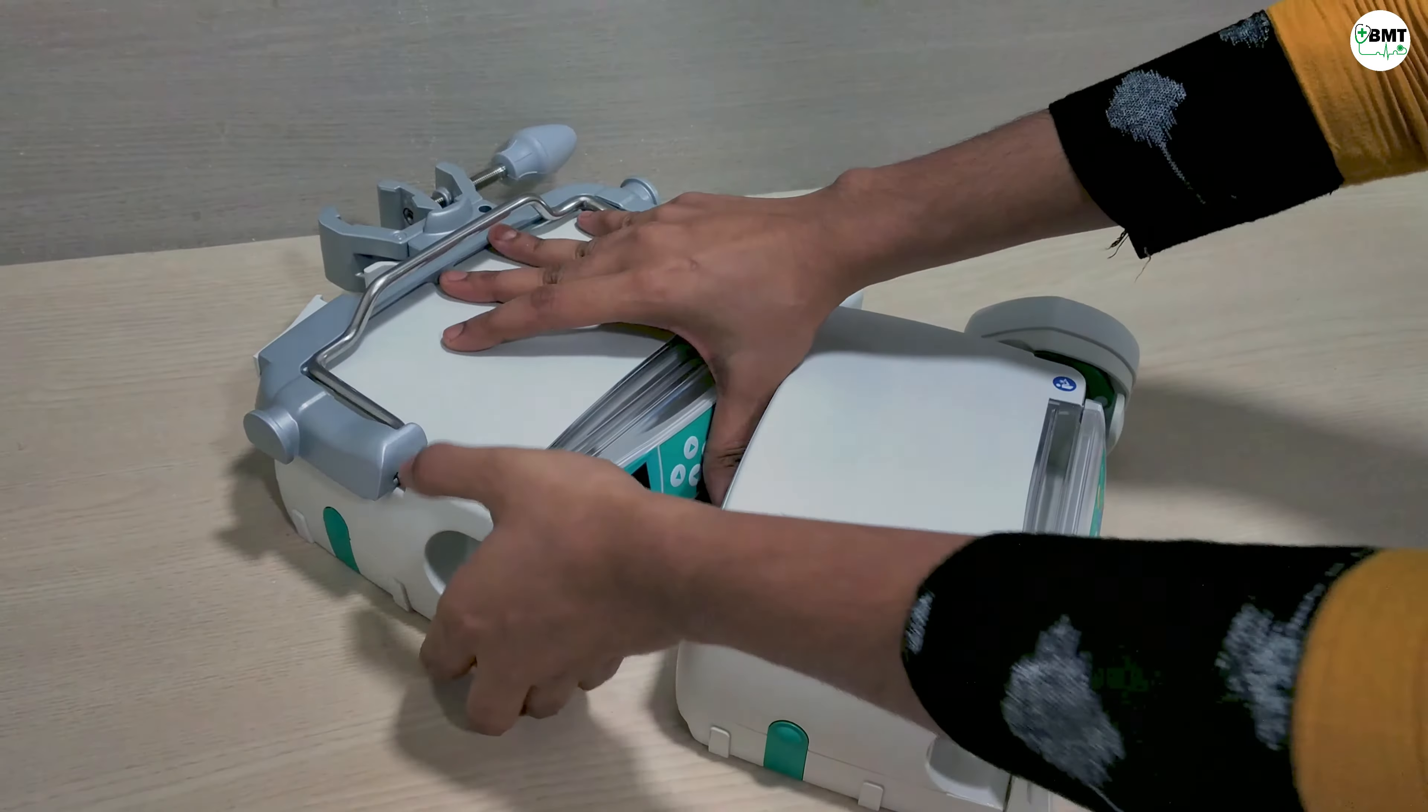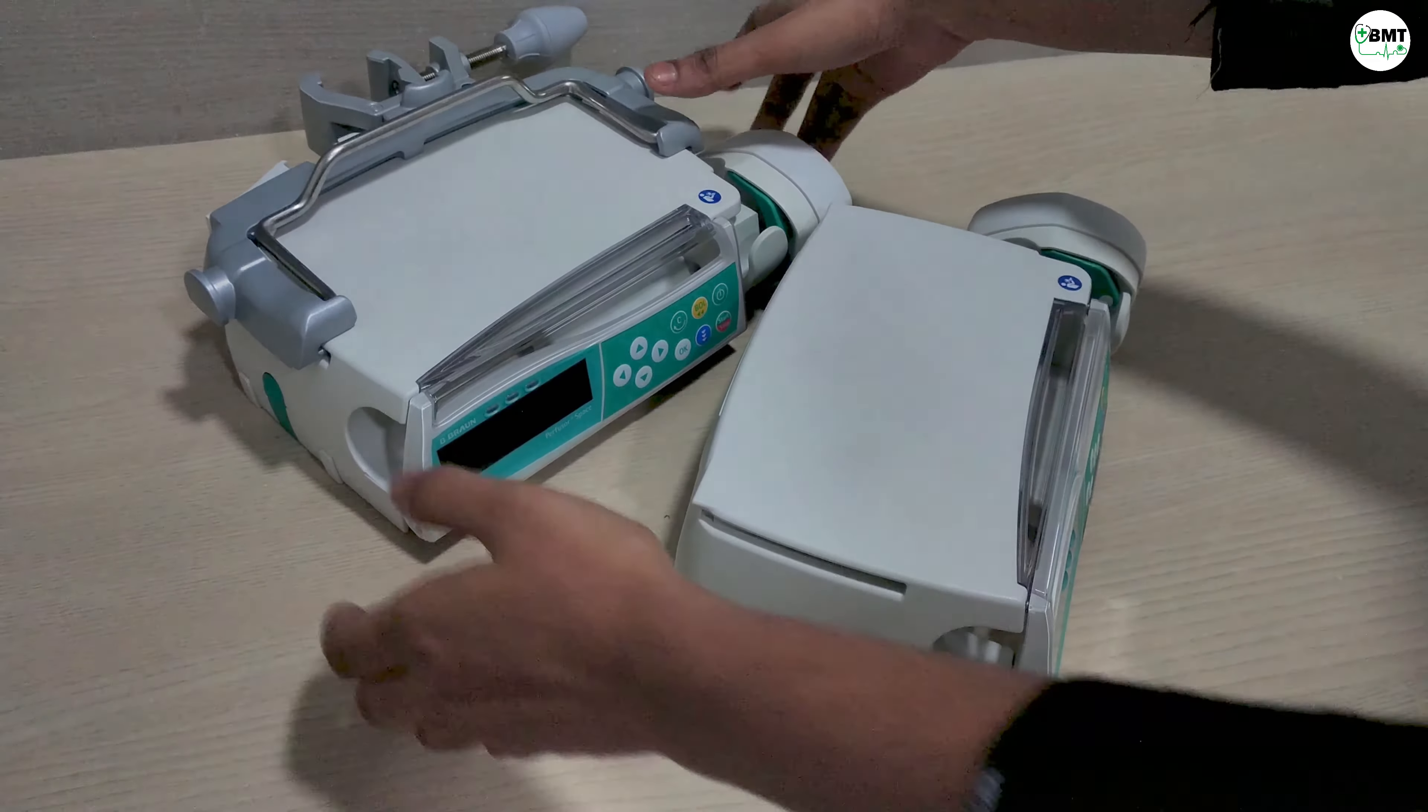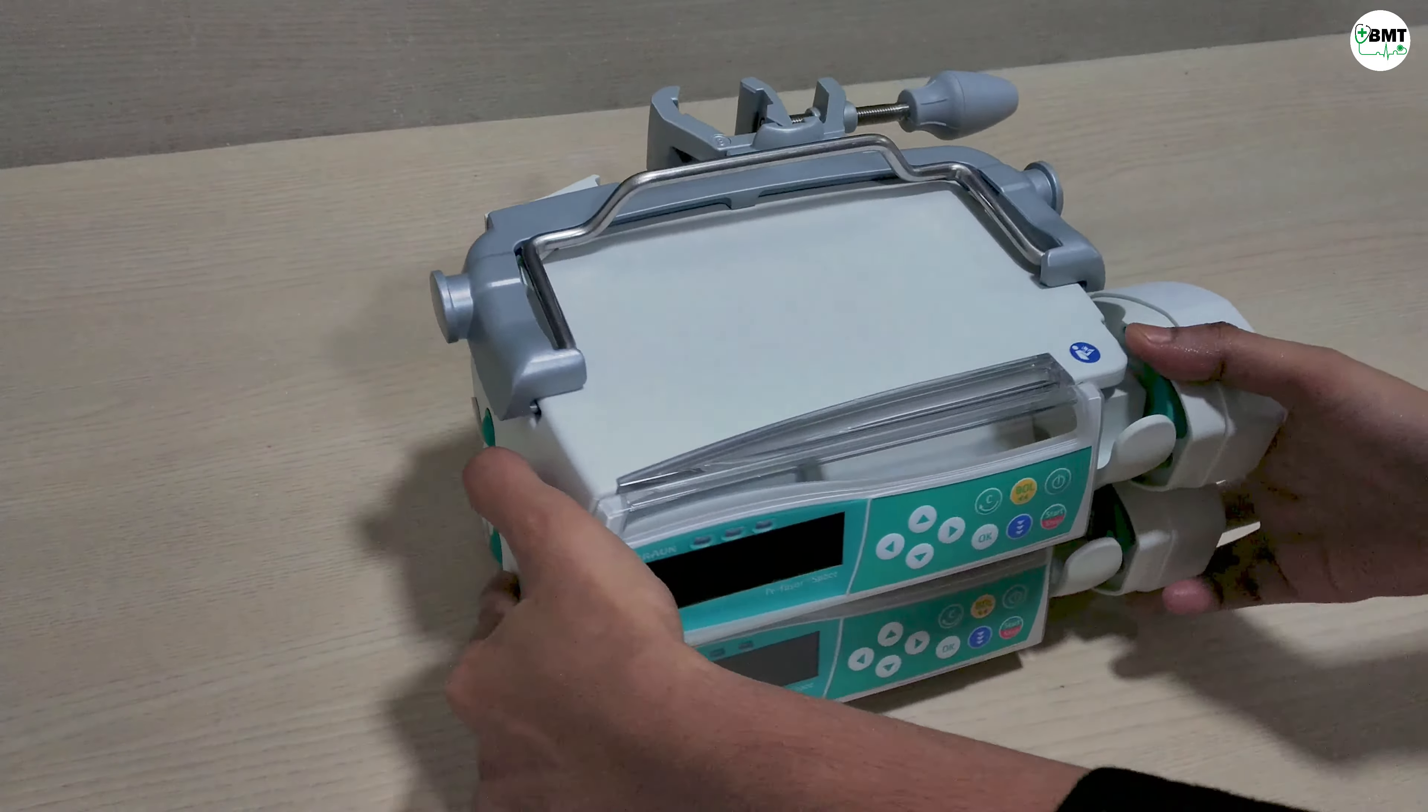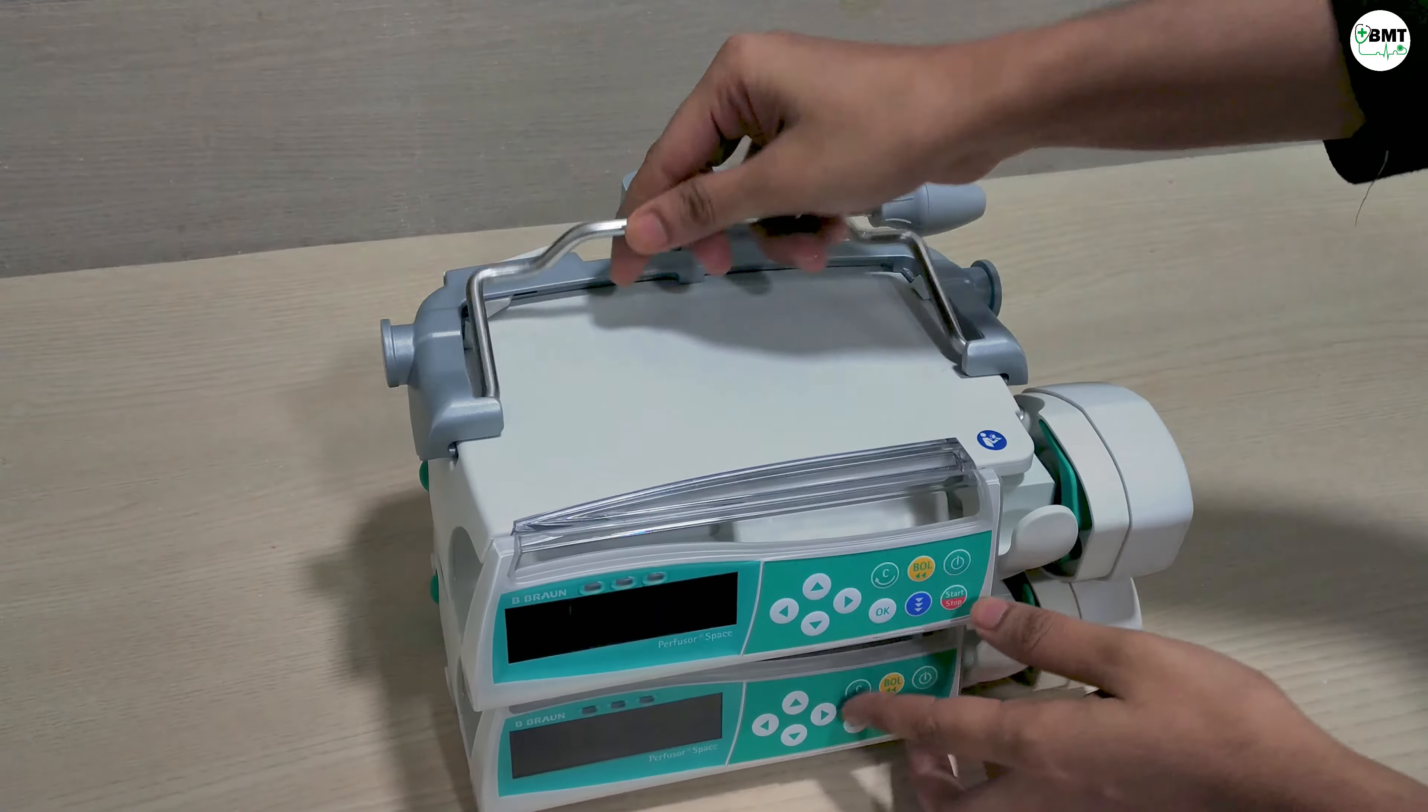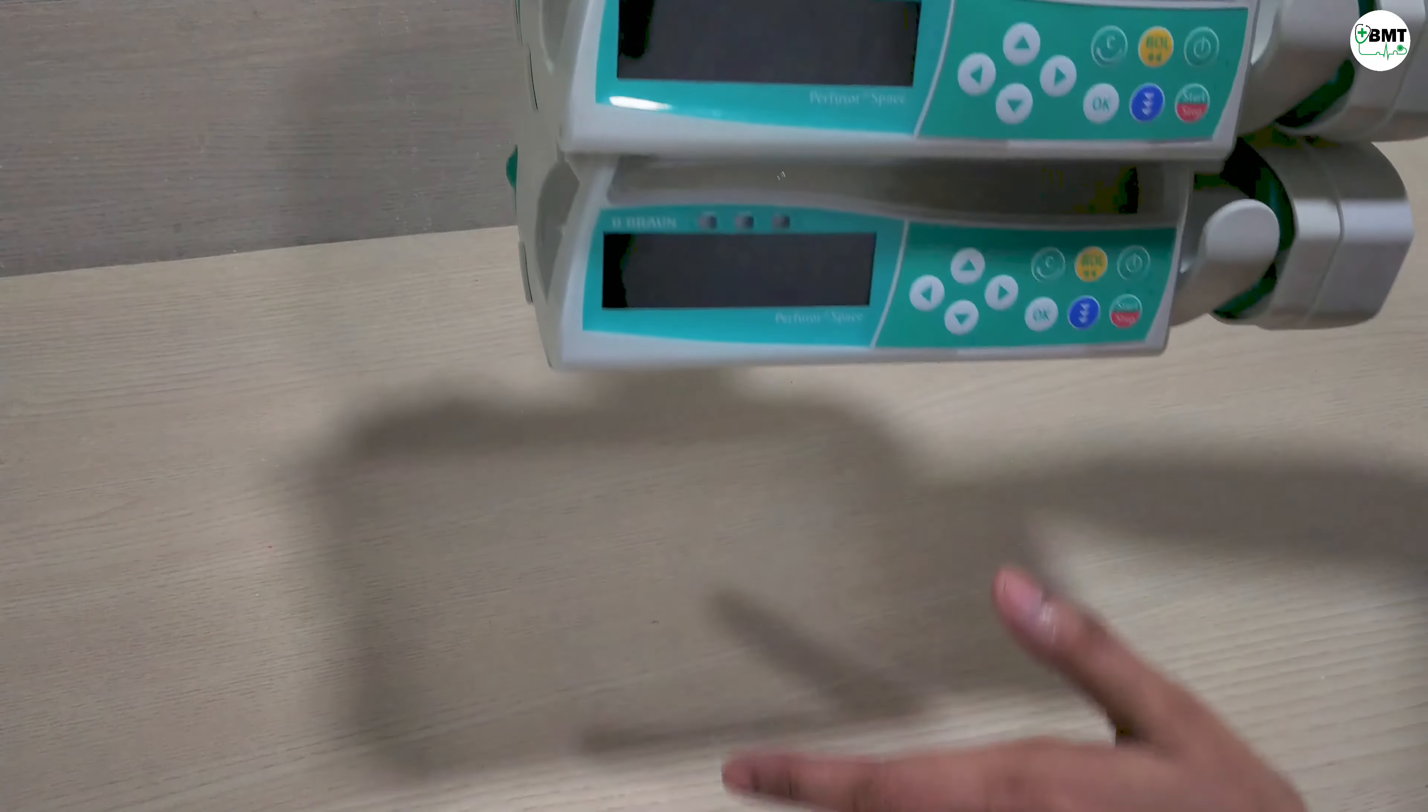For stacking the syringe pump, match this slot with this slot. For stacking syringe pump you have to remove this pole clamp first of the rest all syringe pumps. In one stand you can stack many syringe pumps.